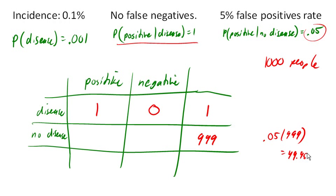So let's just call it 50. So 50 people are going to test positive who don't actually have the disease, and the other 949 are going to test negative.